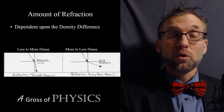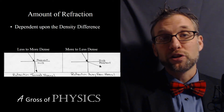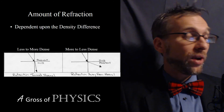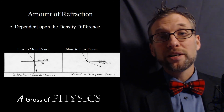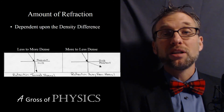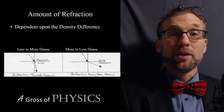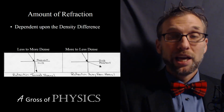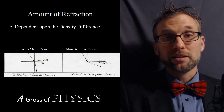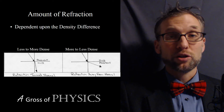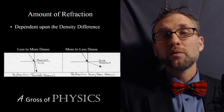We're going to have a quantitative version tomorrow when we have an equation. For now, remember: if you're in more dense and go to less dense optically, it will be a bigger angle. And if you go from less dense to more dense, the angle will get smaller. We have a number of examples of this.